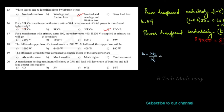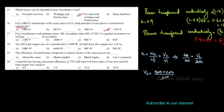The turns ratio is equal to V2 by V1. The primary turns is 100 and the secondary turns is 400. V2 is equal to 400 × 200 divided by 100, which gives 800 V. The answer is Option C.